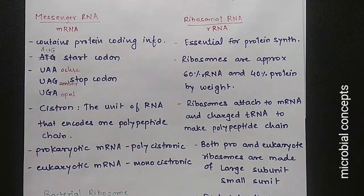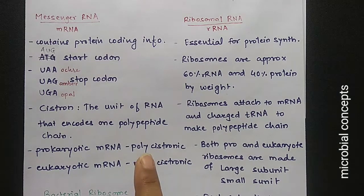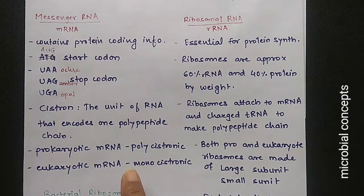In prokaryotes, mRNA is polycistronic — a single mRNA has overlapping genes for various proteins, allowing many proteins to be synthesized from it. In eukaryotes, mRNA is monocistronic — there are separate genes for each protein with no overlapping, so a single mRNA codes for a single protein.